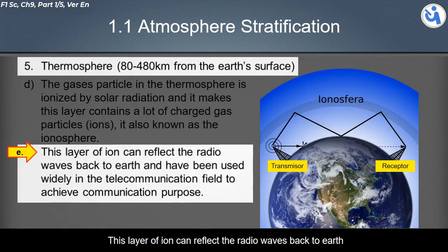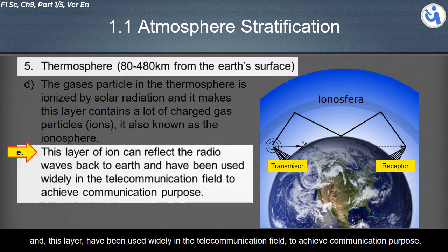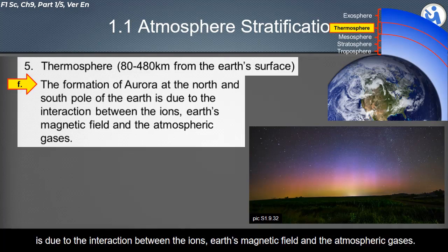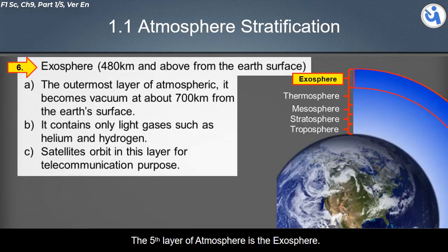The ion layer in the thermosphere can reflect radio waves back to Earth, and this layer is widely used in the telecommunication field. The formation of aurora at the north and south poles is due to the interaction between ions, Earth's magnetic field, and atmospheric gases.